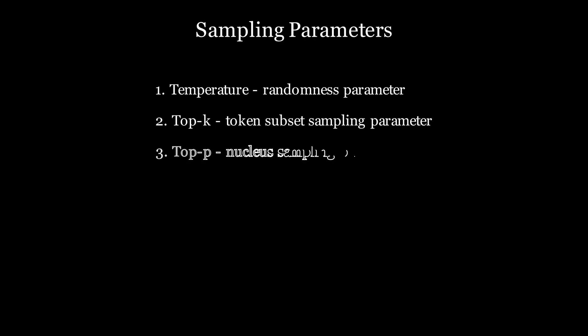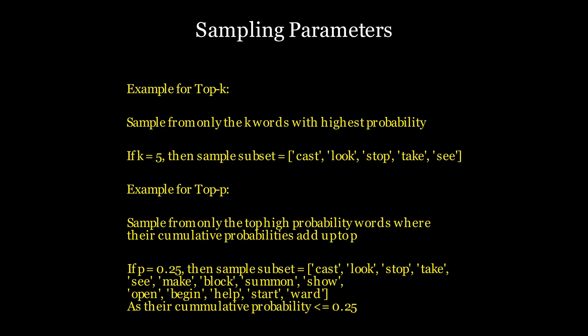Apart from the temperature parameter, we have two more sampling parameters, namely top-k and top-p. Top-k limits the token selection to the top k most likely tokens based on their probabilities. Instead of considering all possible tokens, the model only looks at the top k choices and picks one of them.